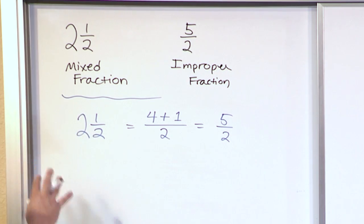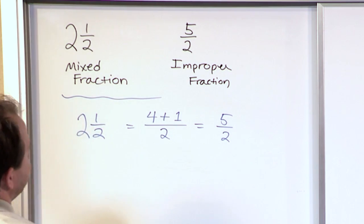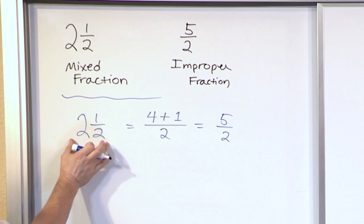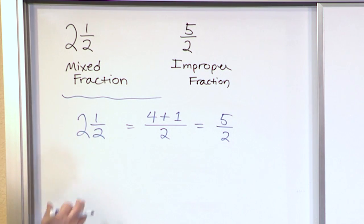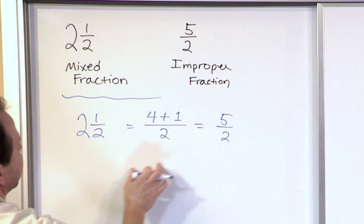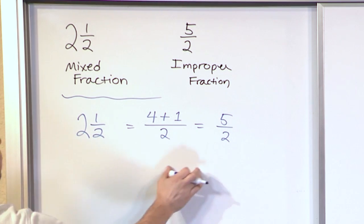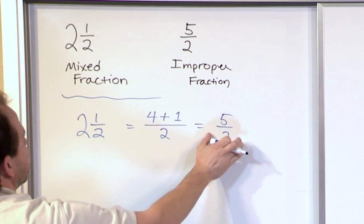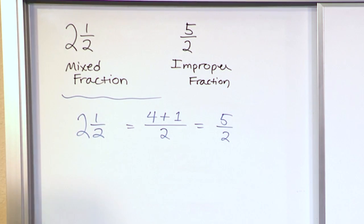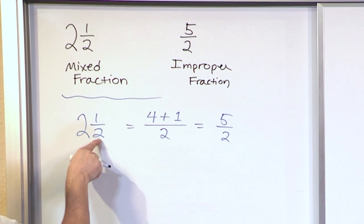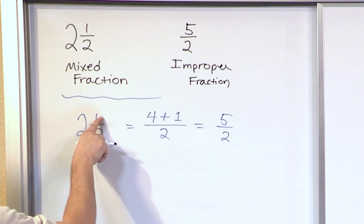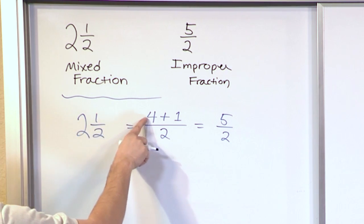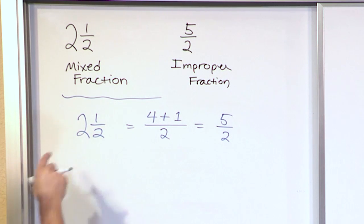If I tell somebody give me two and a half cakes, and on another day I say give me five halves of a cake, they would go get the exact same amount — two whole cakes and another one cut in half. So you take the bottom number times the big number, add the top, and the bottom number stays exactly the same.